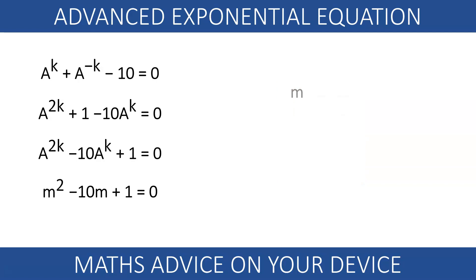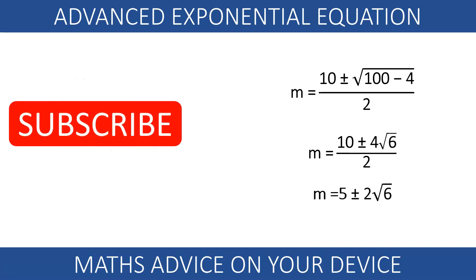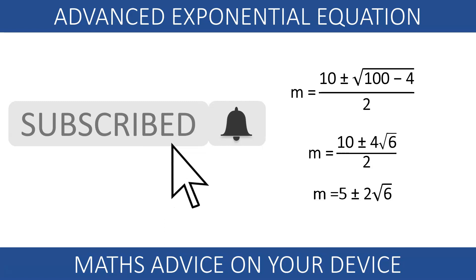We use the quadratic formula to find the solutions for m and then we solve for k. The solutions for m are 10 plus minus 4 root of 6, all that divided by 2. So, 5 plus minus 2 root of 6. Does this ring a bell? It is the value of a and its reciprocal. Remember?